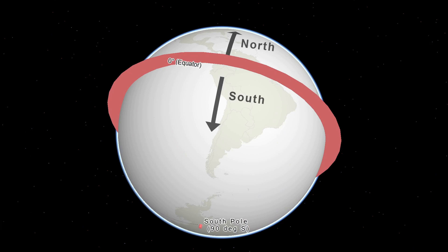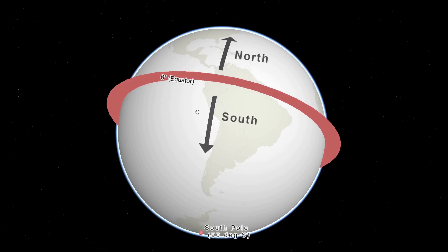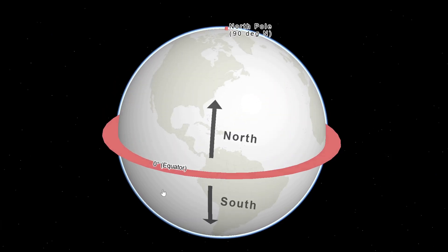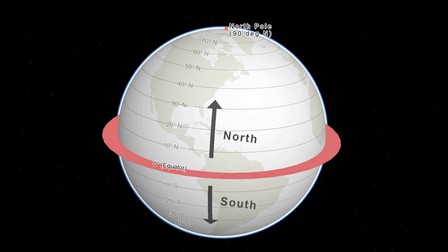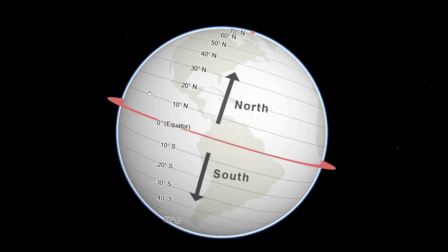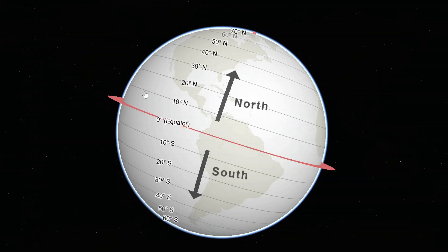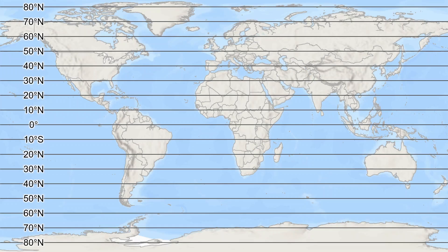Lines of constant latitude called parallels run east-west as concentric circles on the globe, shown here with a 10 degree interval with decreasing circumferences approaching the poles. These circles plot as equal length straight parallel lines on the Mercator projection.